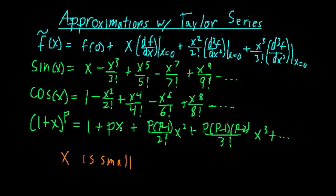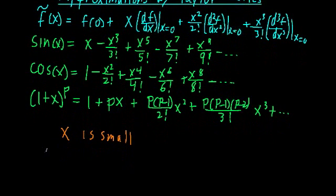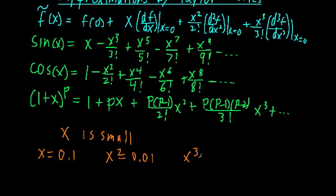Just to give you a sense of what I mean, let's just say what happens if x is equal to 0.1. In that case, x squared would be equal to 0.01, x cubed would be equal to 0.001, x to the fourth would be equal to 0.0001, and all these higher order terms become really, really small, so we can just forget about them.